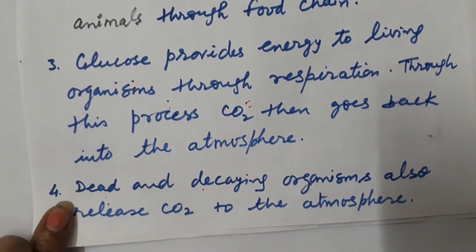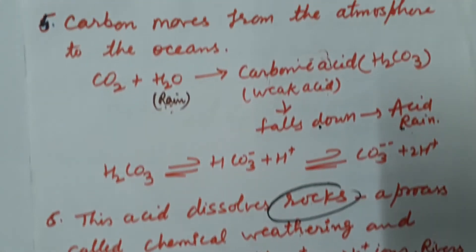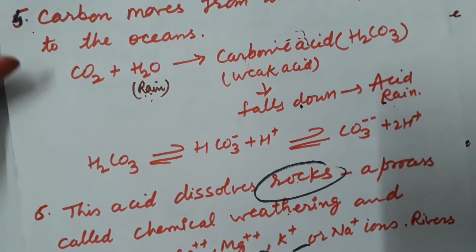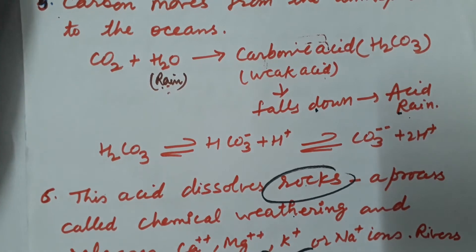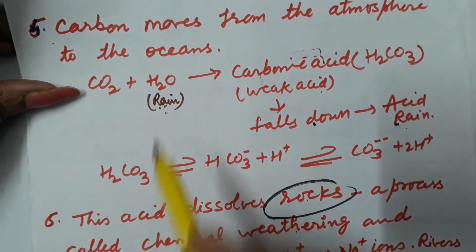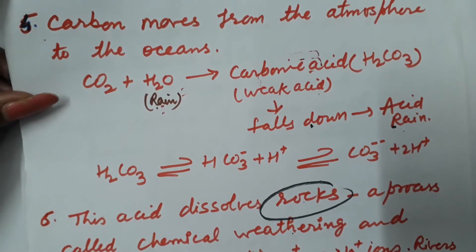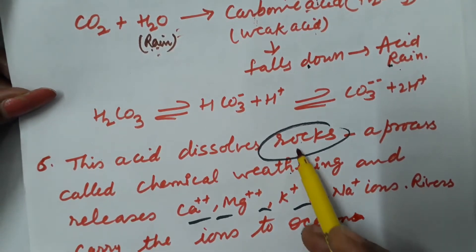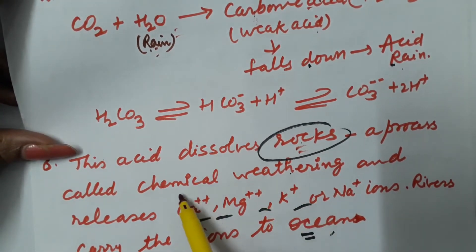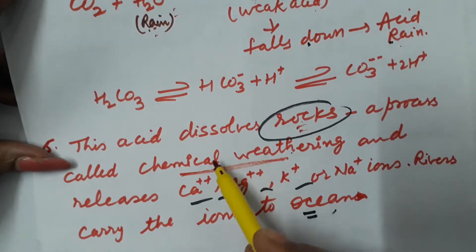Now we study another mode of CO2 cycling in nature. Carbon moves from the atmosphere to the oceans. CO2 present in the atmosphere combines with rain water or the moisture present in the atmosphere and carbonic acid is produced. Carbonic acid is a weak acid. When it falls down on the rock surface, disintegration of rocks takes place.